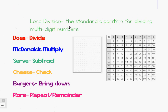Today you have learned the strategy of long division. Long division is known as the standard algorithm — the regular steps you can follow for dividing multi-digit numbers. Remember, when you're doing long division, it's helpful to have graph paper and a multiplication chart. Follow the steps: divide, multiply, subtract, check, bring down, repeat, and remainder. Use the saying 'Does McDonald's serve cheeseburgers rare?' to help you remember. Good luck, and let me know if you have any questions.